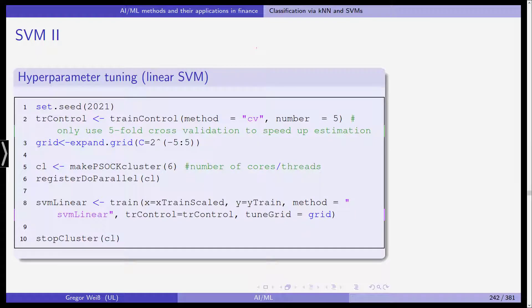So we start with the hyperparameter tuning with the linear support vector machine or the support vector classifier. We set seed in line 1 to be able to replicate the results later on. We again use train control as an option later on in the train command in line 8. In line 2, we write down train control with cross-validation as the method and 5-fold cross-validation in the object TR control. We set the grid as we described it on the previous slide. And then we use six clusters using the PSOC cluster in R.